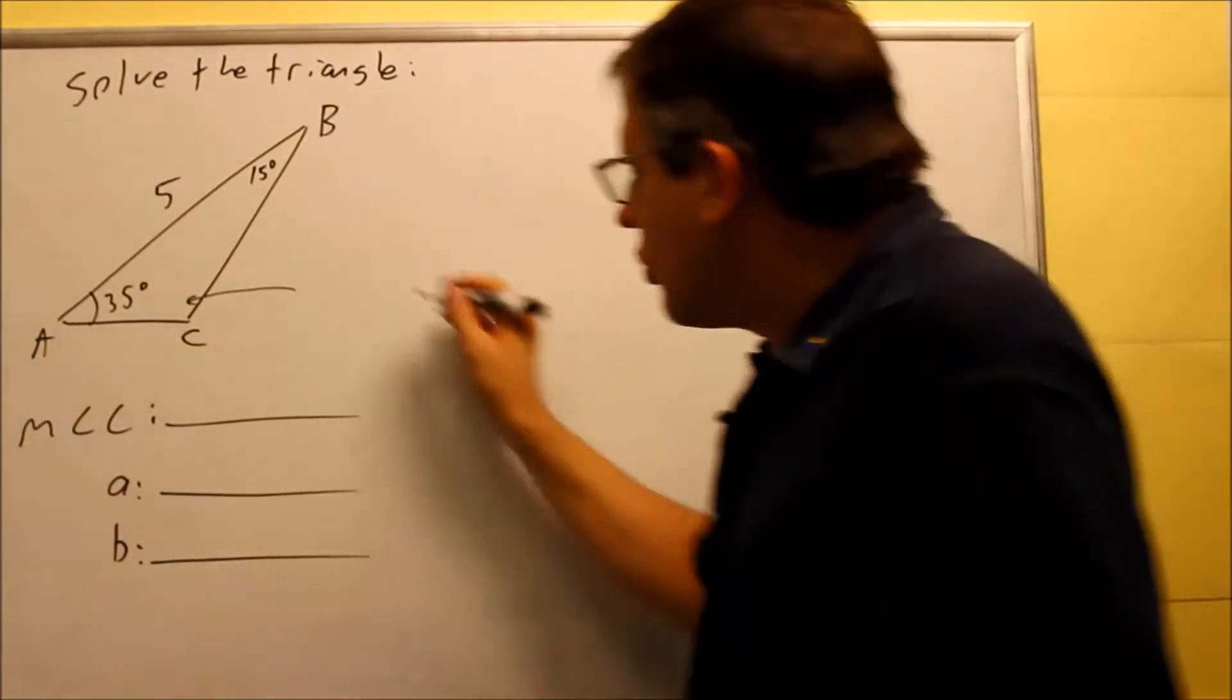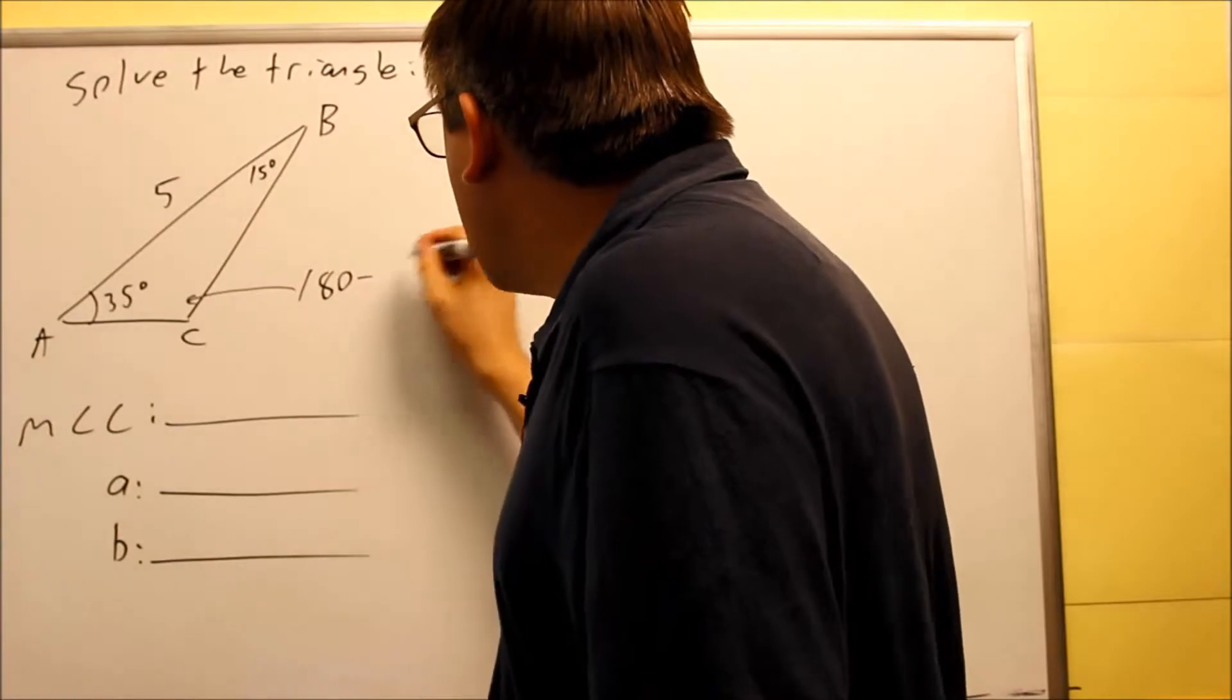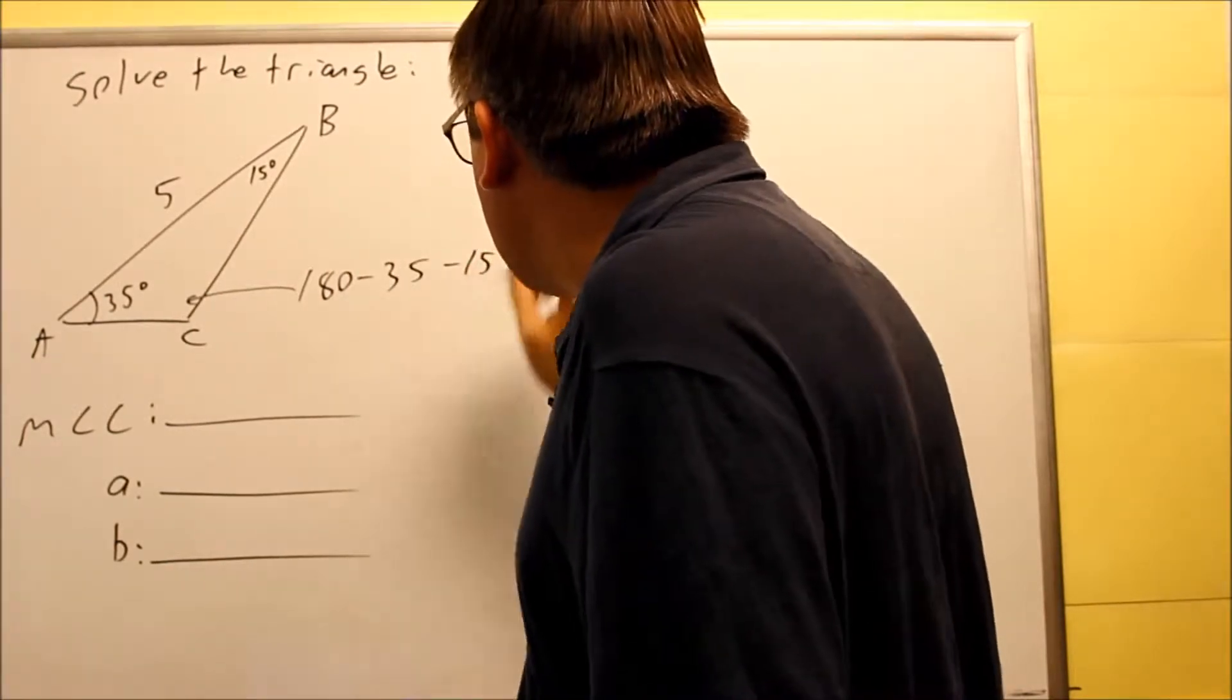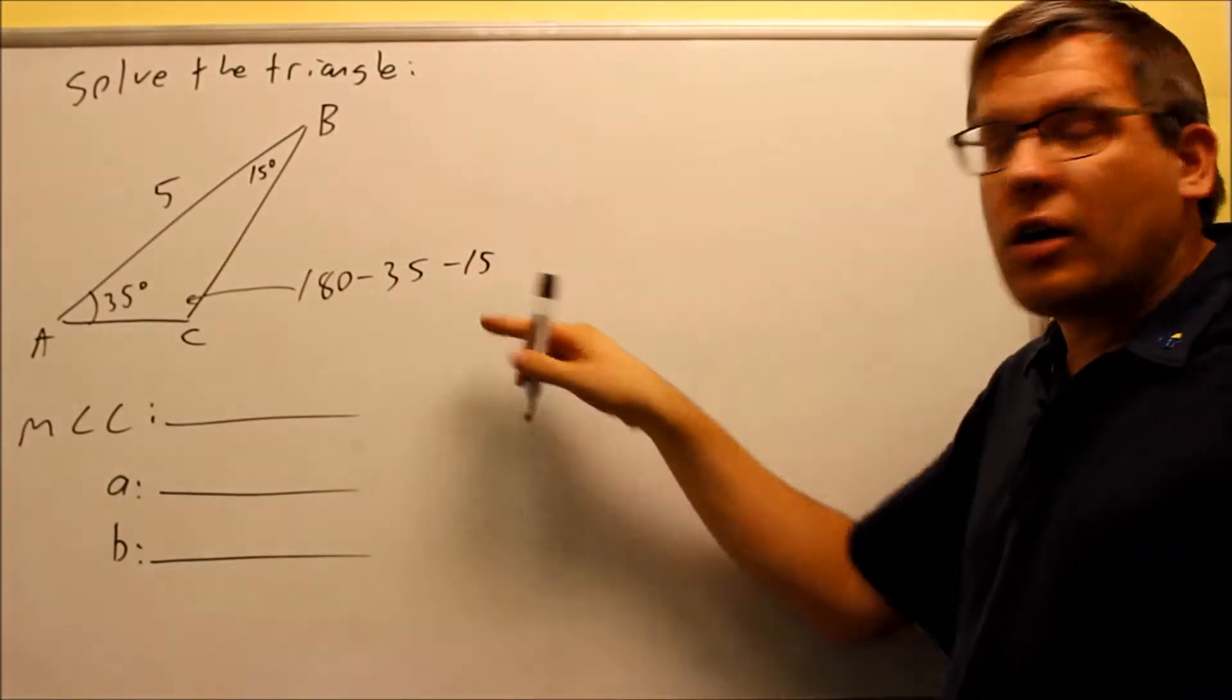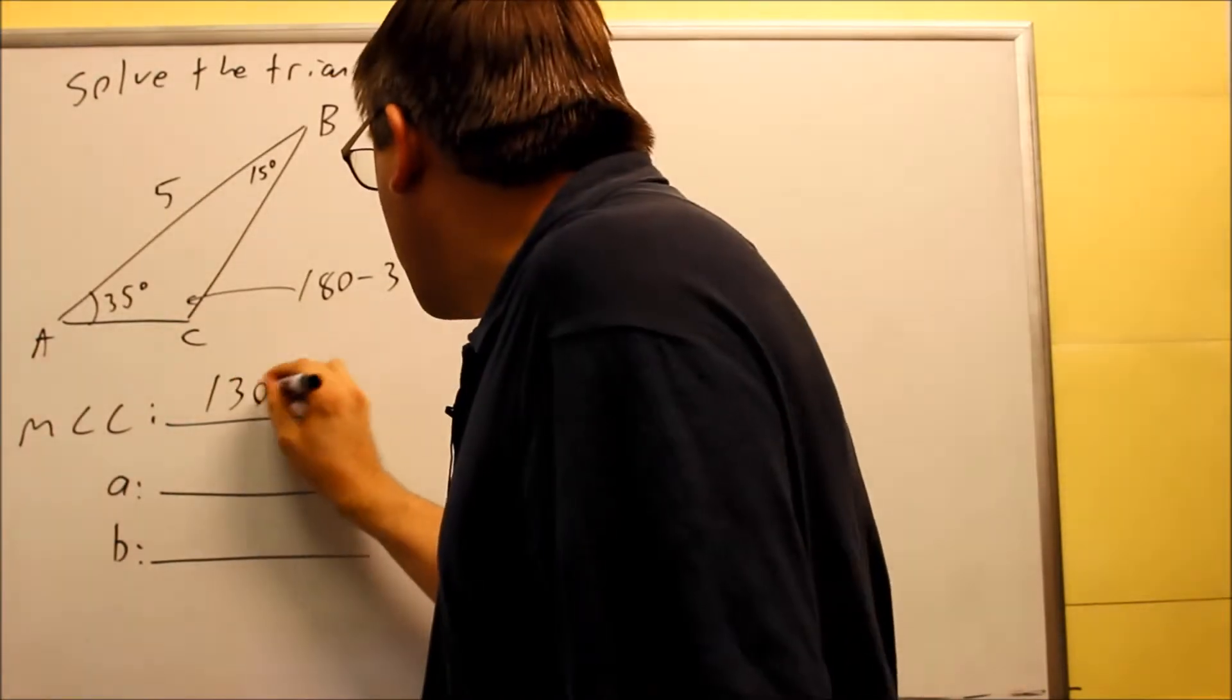We want to first find out what that one is. You're going to do 180 minus 35 minus 15. And if we do that, you're going to be left with 130.